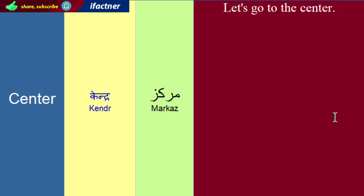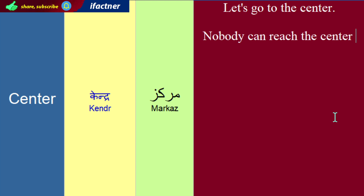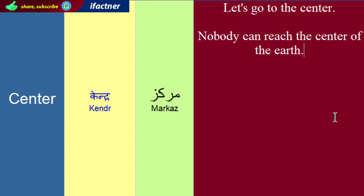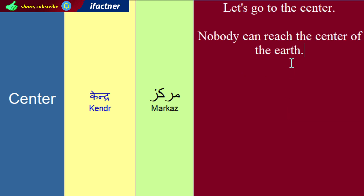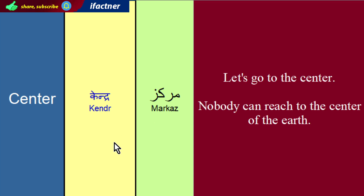Isi tarha, hum keh sakte hain: 'Nobody can reach the center of the earth.' Ki zameen kay markaz tak, zameen kay center tak, koi bhi nahin pehaunch sakta. Hum issa liktay hain: nobody can reach to the center of the earth.